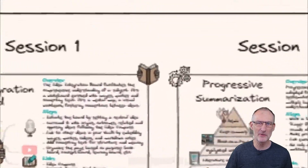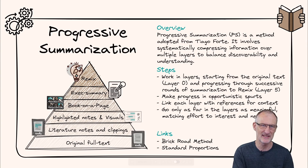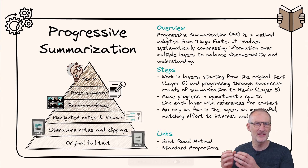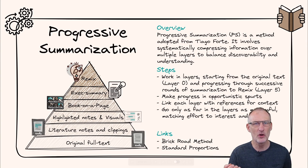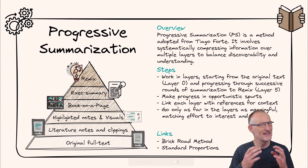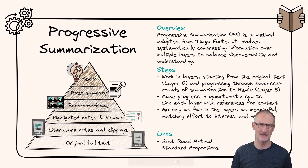My approach has its roots in Tiago Forte's progressive summarization, but it's changed so much that it might be hard to see the similarities now. Tiago's method balances compression with maintaining context, aiming to create a short, searchable summary that still holds enough context to remind you of key points years later. It's a simple, iterative process that you can execute in short chunks over time, converting a full book into a meaningful mini-summary.